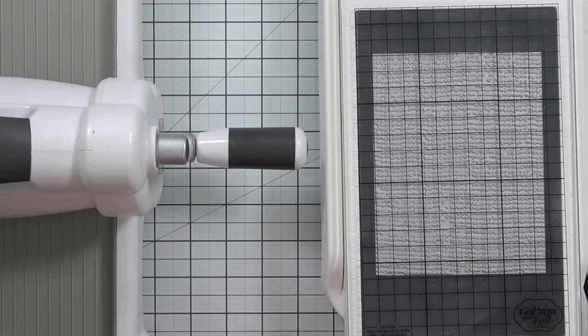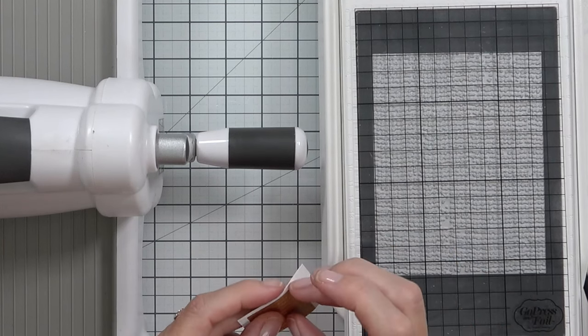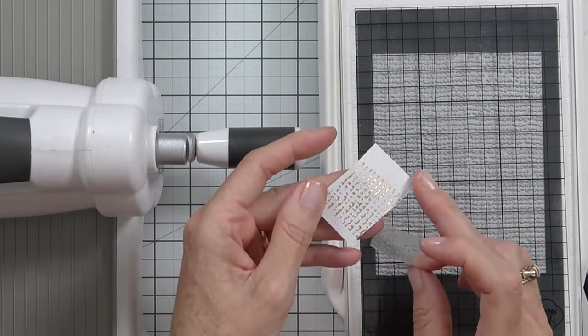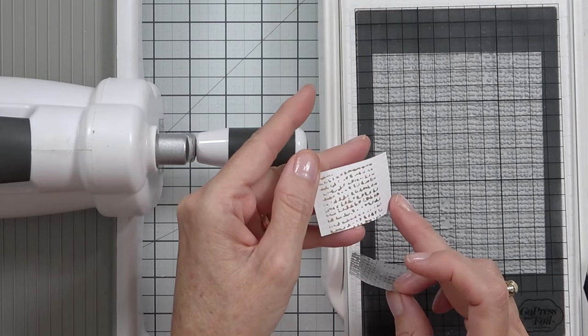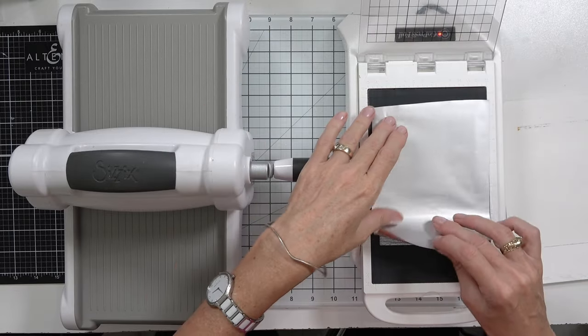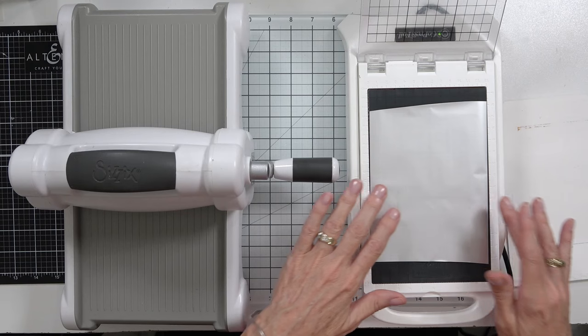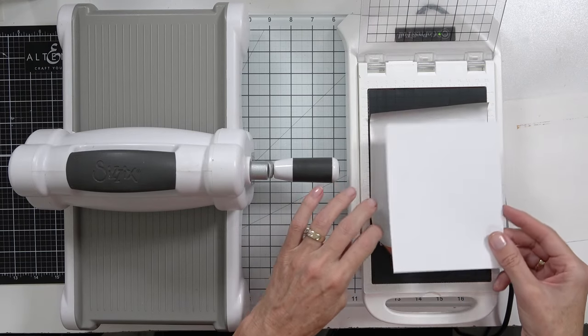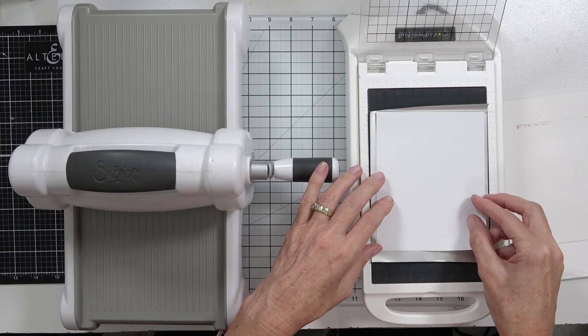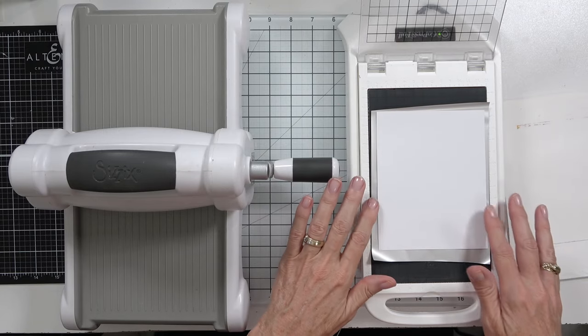So the second technique we're going to be doing here today is the hot foil. You can use your press plates to hot foil with, and I always do a little test piece first to make sure that I've got my sandwich right. I've got a Go Press and Foil. I've heated the platform up as well as the press plate. I've got the brush gold mirror foil and I've put the pretty side facing the plate, and then I've got my cardstock on top of that.